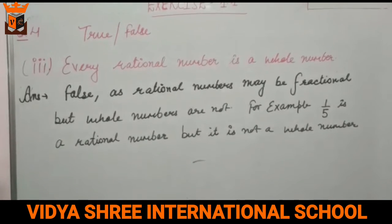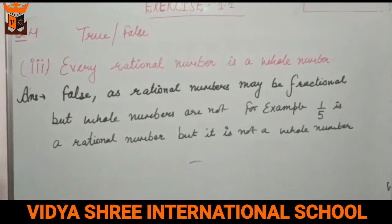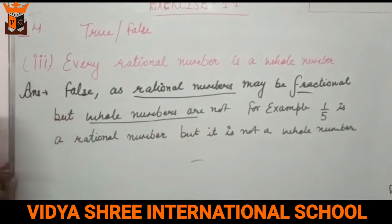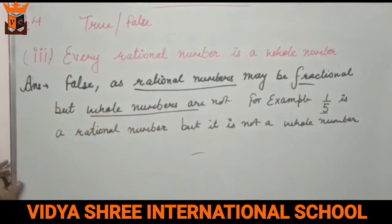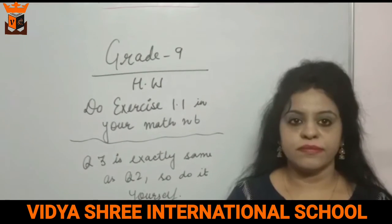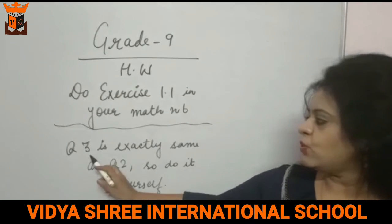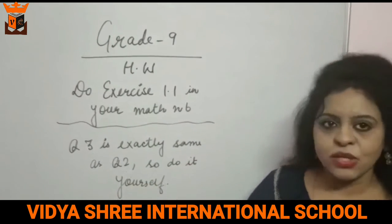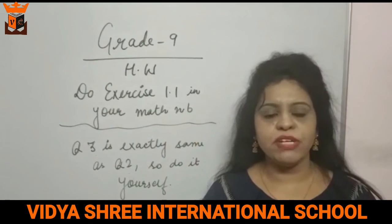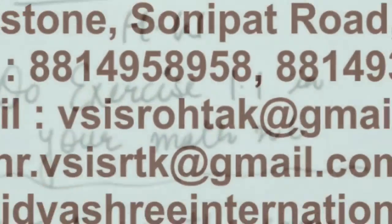Third part: Every rational number is a whole number. No, because rational numbers are fractional numbers, and whole numbers are not fractional. So this is false. This is your homework — do Exercise 1.1 in your maths notebook. I am sending a PDF also in which you can see all these solutions. So do your work properly. Take care and bye-bye. Thank you.